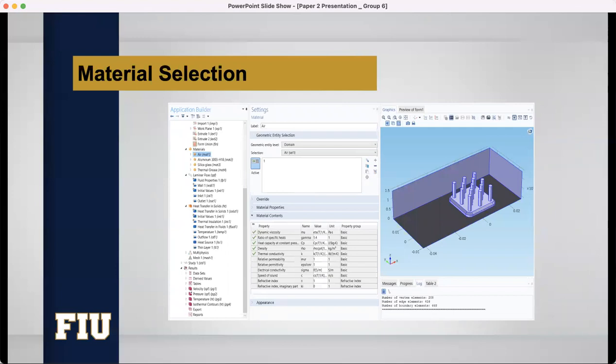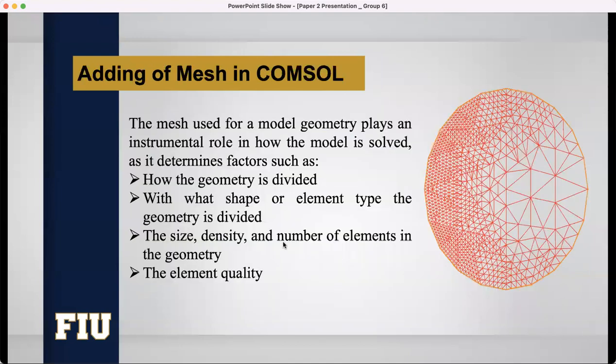Here we can see the setting tab of material. In this section, we can select the domain. After selecting any specific area, and then we will select the plus button. Then, this domain will be selected. This is how we selected our domain for specific materials. And here, we can see the material contents. Here, all the properties. COMSOL will, by default, take the electrical and other properties from their material browser.